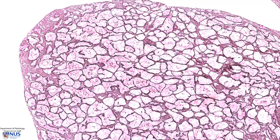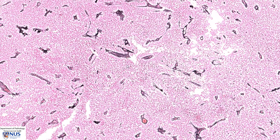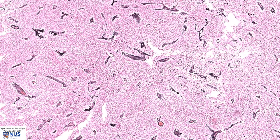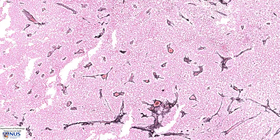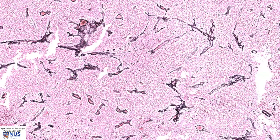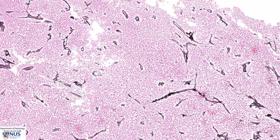Now let's contrast this with the pituitary neuroendocrine tumor that we just saw. Here is the reticulin stain for the pituitary neuroendocrine tumor. We can see that we have completely lost that beautiful compartmentalized pattern of reticulin staining — we only have some residual staining around blood vessels. As I move around, again we can see how that nice nested pattern is lost.